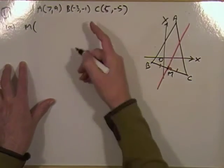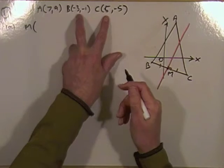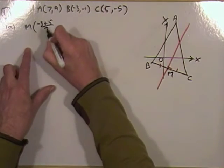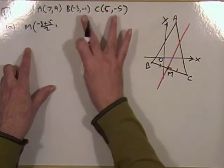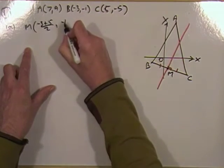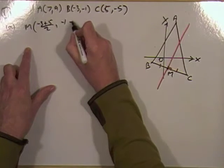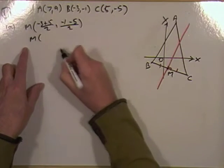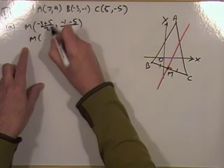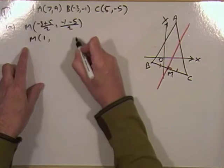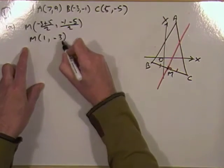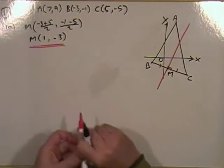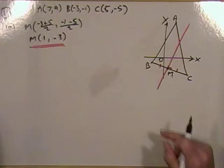The midpoint is the average of the x coordinates — negative 3 plus 5 upon 2 — and the average of the y coordinates — negative 1 and negative 5 upon 2. Which means M is going to be the point 1, negative 3. So the point on the line is the point 1, negative 3.